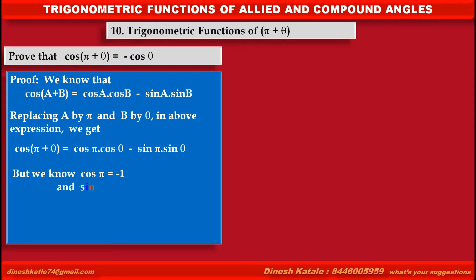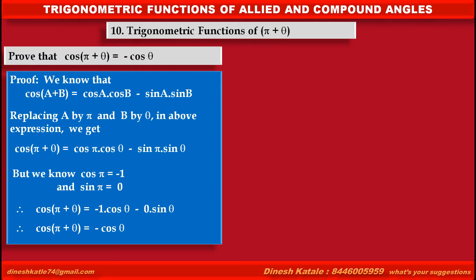But we know cos π is equal to minus 1 and sin π is equal to 0. Therefore, substituting these values in the above expression, we get cos(π + θ) is equal to minus 1 into cos θ minus 0 into sin θ. Therefore, solving the above expression, we get cos(π + θ) is equal to minus cos θ.